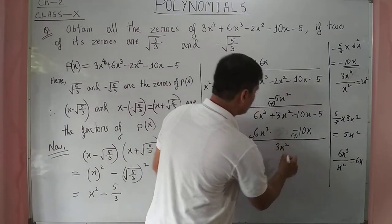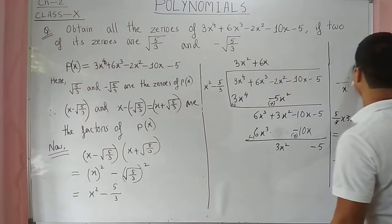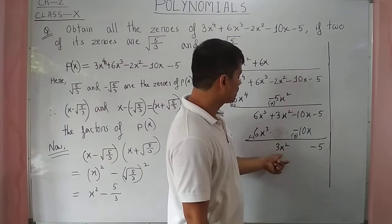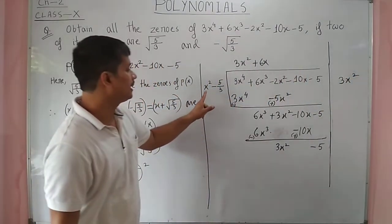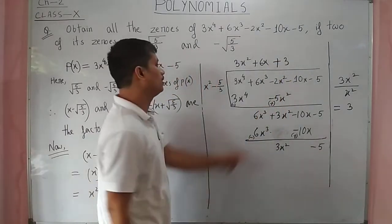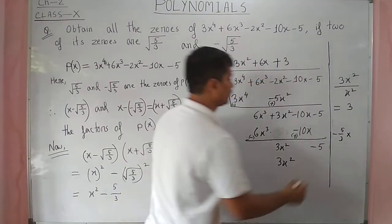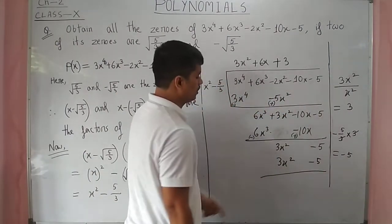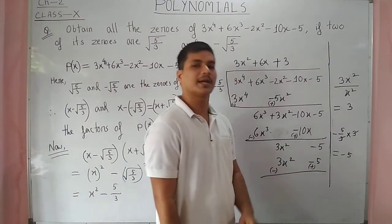Now the remaining polynomial is 3x² - 5. Dividing 3x² by x² gives 3. Then 3 × x² = 3x² and 3 × (-5/3) = -5. After subtracting, 3x² - 3x² cancels and -5 + 5 also cancels. There is no remainder.